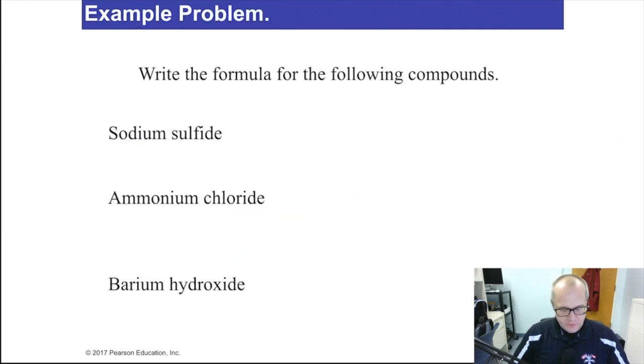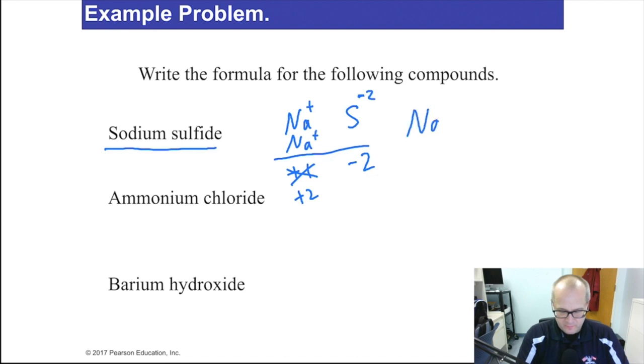Now let's go the opposite direction. We have the name, let's make the formula. These are a little tougher. Sodium sulfide. I know sodium is Na plus one, sulfide is negative two. So I have a positive one, negative two. I need to have a positive two to balance out the negative two, so I need to have two sodium. So the formula must be Na2S for the first one. I had to have plus two to balance out the negative two of the sulfide.